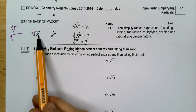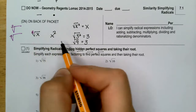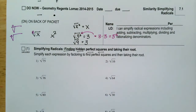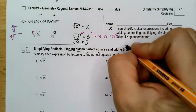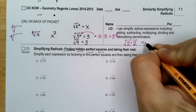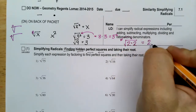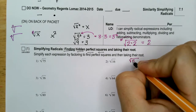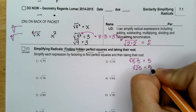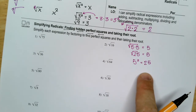The second root of x squared is x. The second root of 3 squared is 3. If you have a square root symbol and the same number is multiplied by itself under it, you can take it out. The square root of 2 times 2 is 2; the square root of 5 times 5 is 5. So the square root of 25 is 5 because 5 squared is 25.